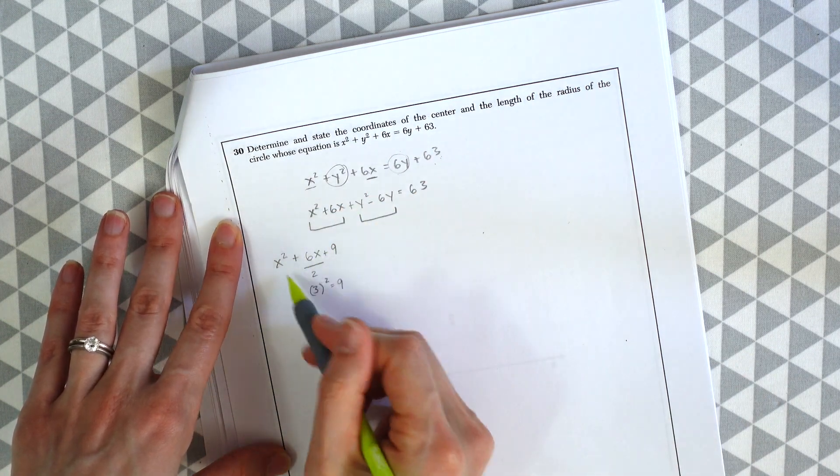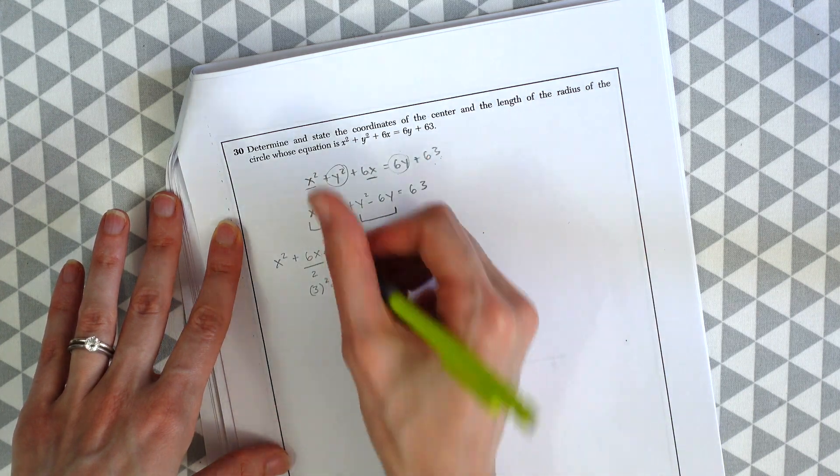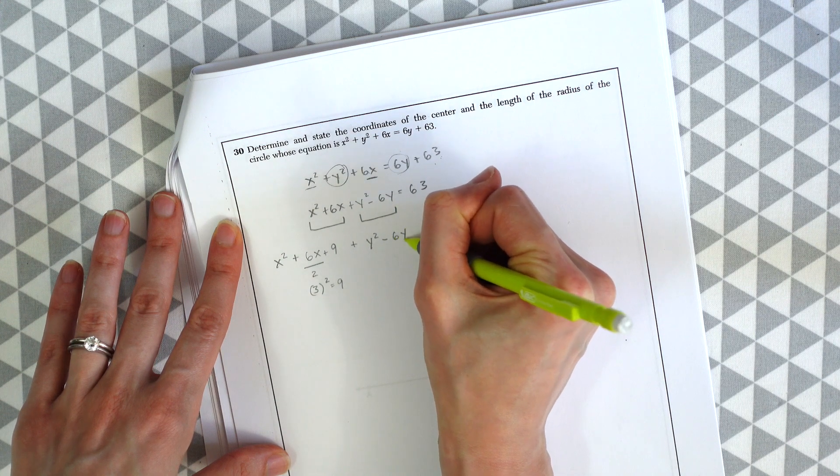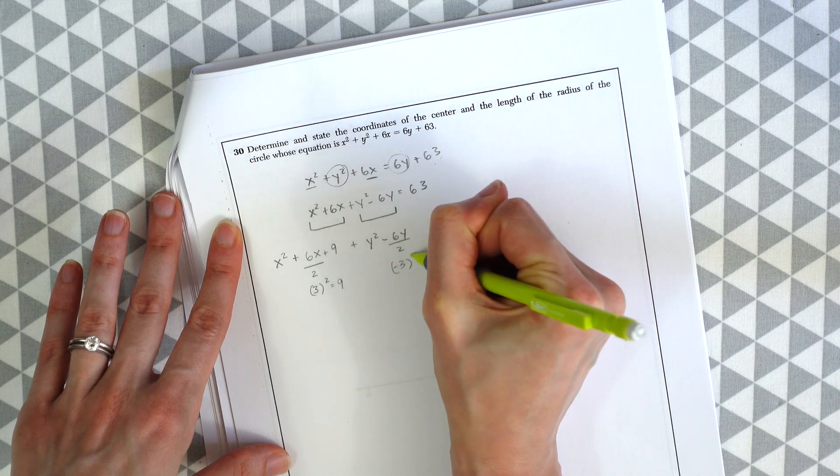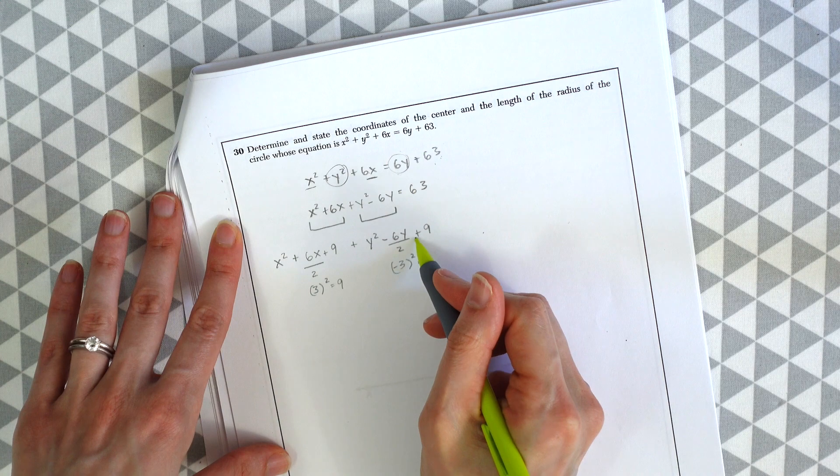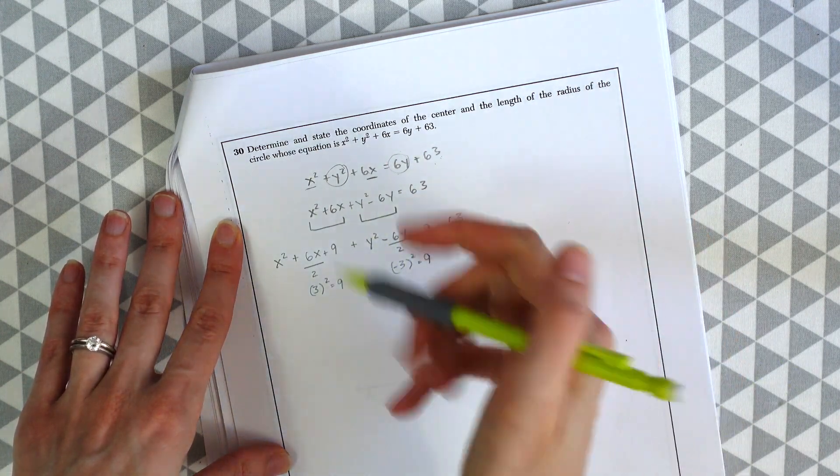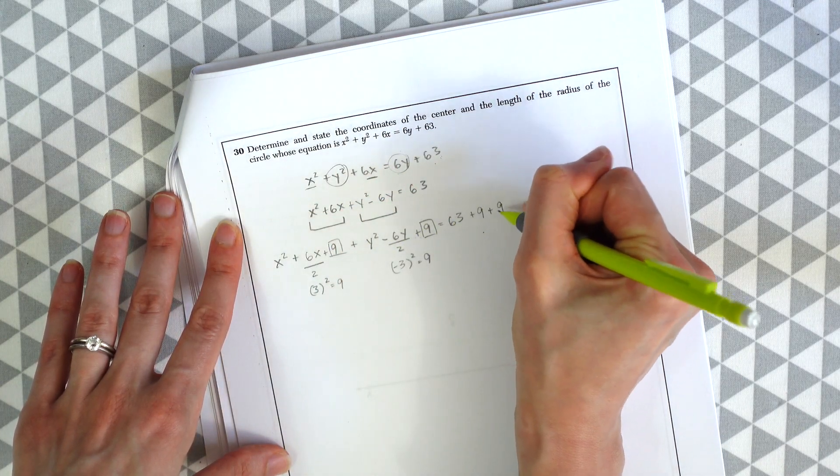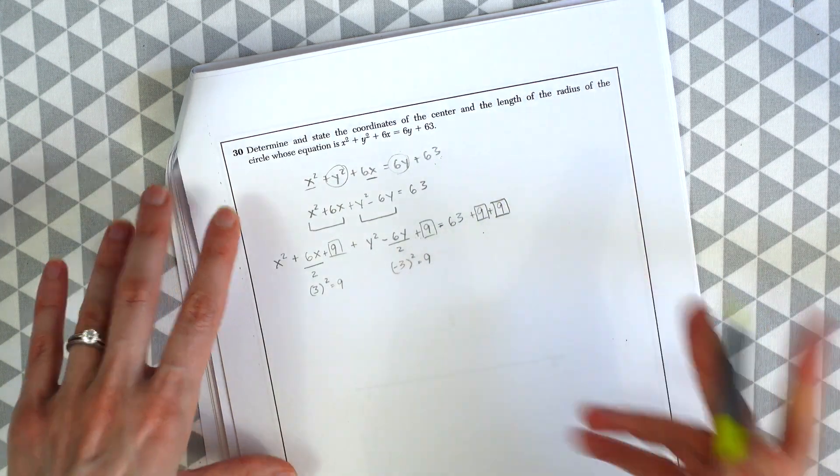And then we're gonna add that to our little group. And then now we're gonna do the same thing on the other side with y. Y squared minus 6y divide negative 6. Divide it by 2. You get negative 3. And you square it and you get 9 again. So we're gonna add 9 to our little group for y's. And meanwhile on the other side the numbers that we just added 9 and 9 we're gonna add to this side. To this other side of the equal sign.